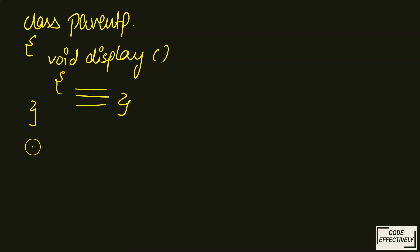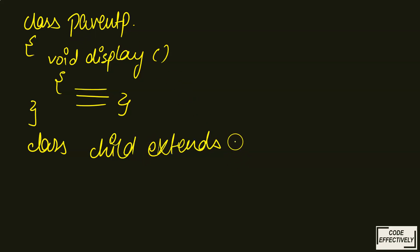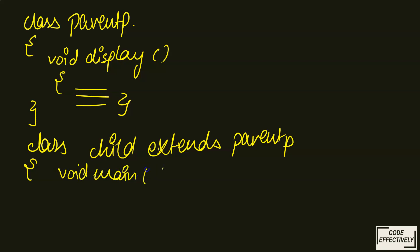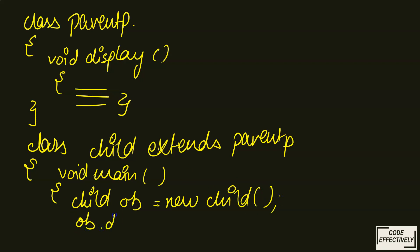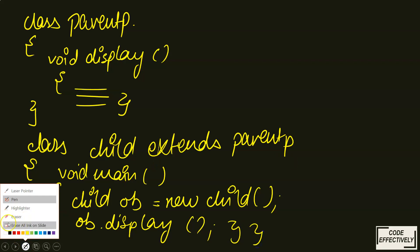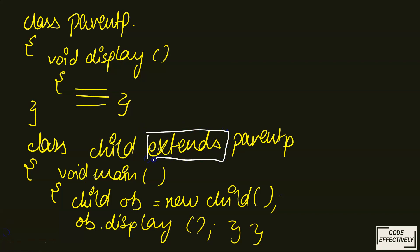After writing the parent class, I create a class called 'Child' and write 'extends ParentP'. Inside the child class, I write its own methods — let's say 'void main'. Within void main, I create an object of the child class: 'Child ob = new Child()'. Then I call 'ob.display'.